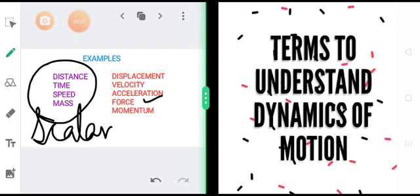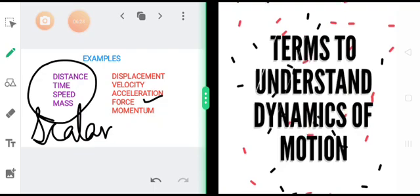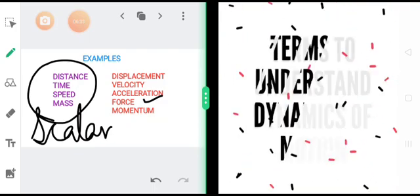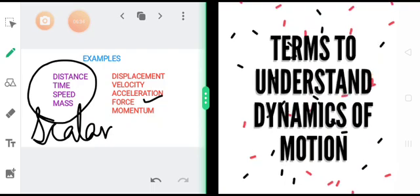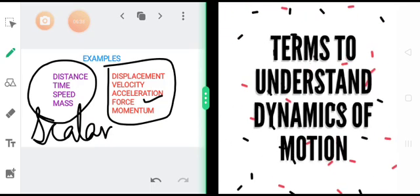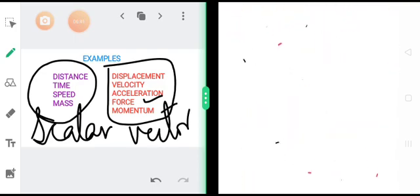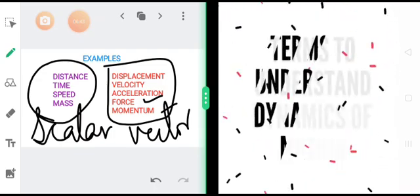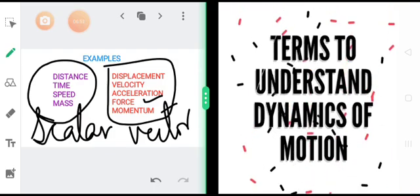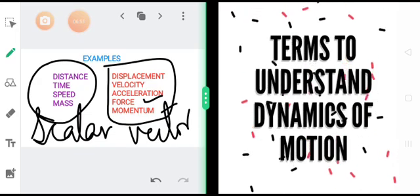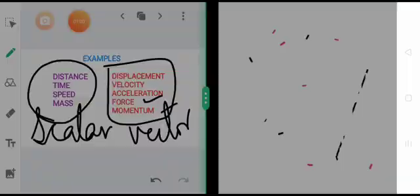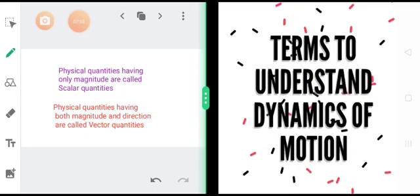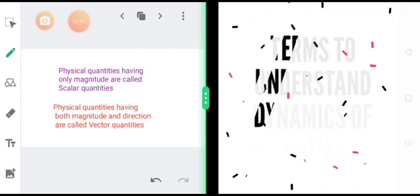Such physical quantities in which both magnitude as well as direction play an important role — where complete information can only be given with both magnitude and direction — are placed in another group called vector quantities. From now onwards, whenever a new term is introduced, you need to understand whether it is scalar or vector. Scalars have only magnitude while vectors have both magnitude and direction.